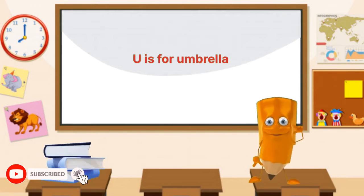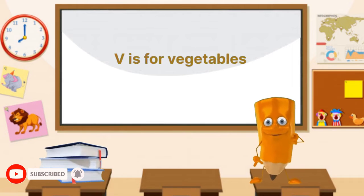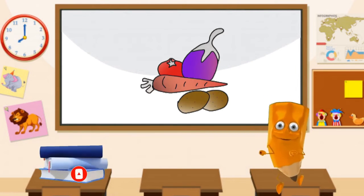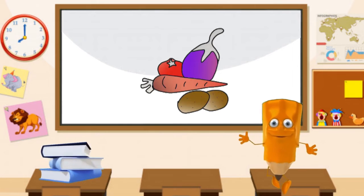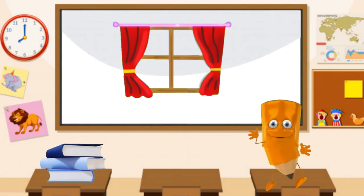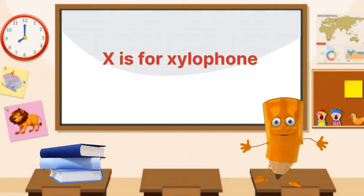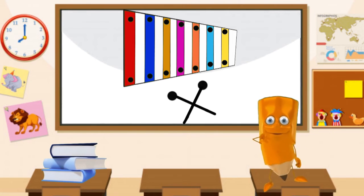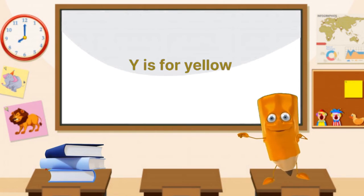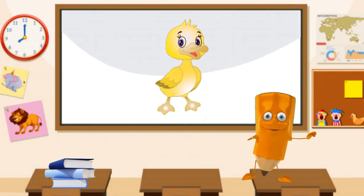U is for umbrella. V is for YG table. W is for window. X is for xylophone. Y is for yellow.